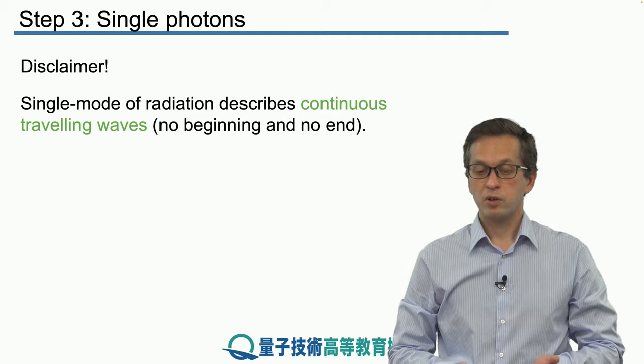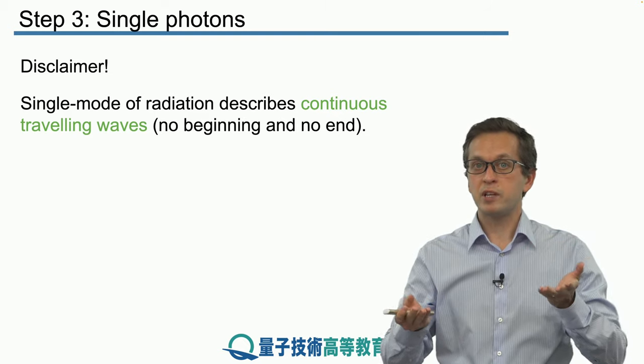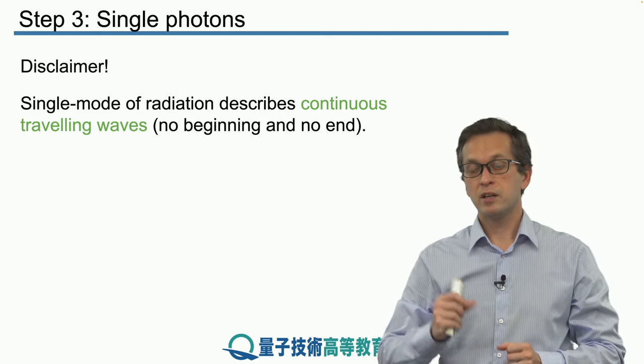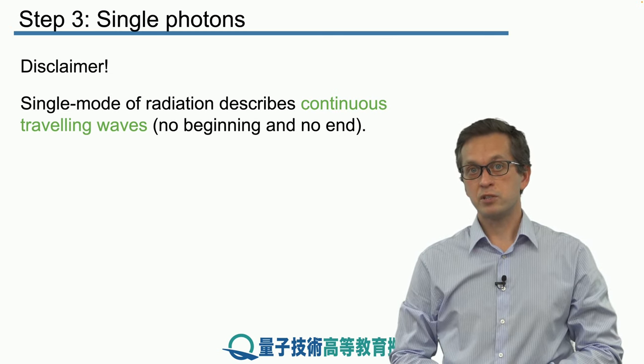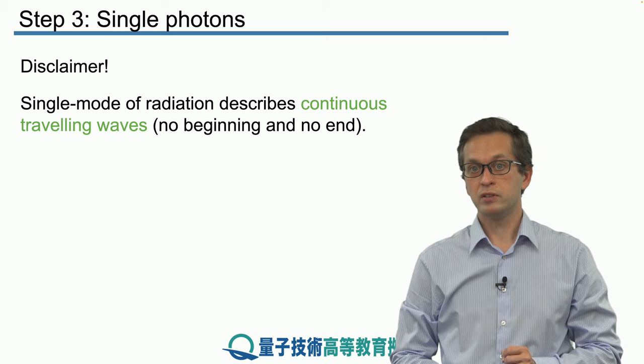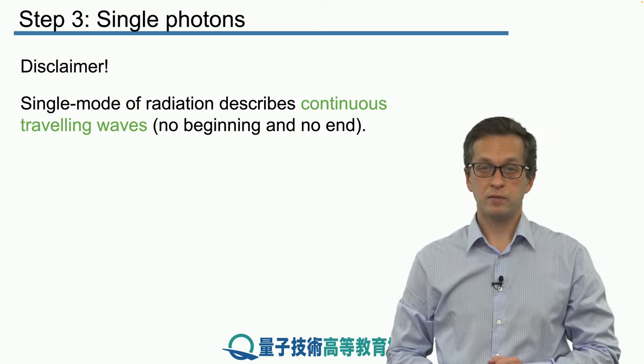In other words, when we prepare the atom in the excited state, we must wait some time until the atom de-excites, emitting one photon of radiation. So there's a clear beginning to our one photon state of the field, and there's an end when we detect the photon.